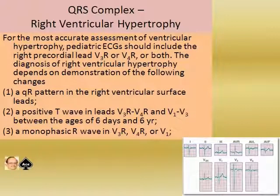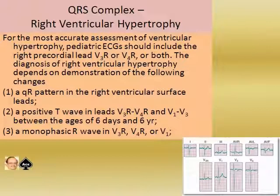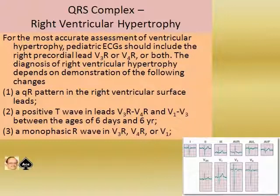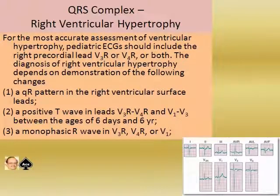Number three is a monophasic R wave in V3R, V4R, or V1. So those are the three main important patterns to remember to diagnose RVH: a QR pattern in the right ventricular surface lead; a positive T wave in V3R, V4R, V1, V2, V3 between six days and six years; and a monophasic R wave in V3R, V4R, or V1.